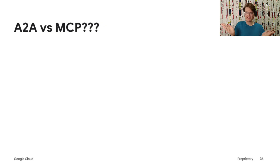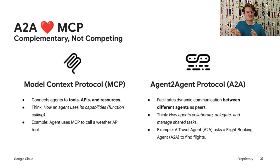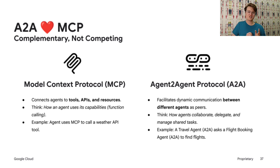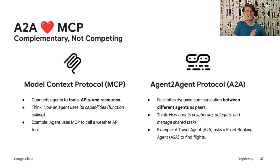Does A2A replace MCP, or are they just going to be competing forever? Absolutely not. A2A and MCP are complementary, not competing. MCP is all about how an agent connects to its tools, APIs, and resources — think of it as the standardized way an agent performs function calling, how it interacts with its own capabilities or external services it has direct access to. A2A, on the other hand, facilitates dynamic communication between different independent agents acting as peers — it's about how agents collaborate, delegate tasks, and manage shared workflows. So you'll often see both in a sophisticated agentic system: agents use A2A to coordinate with other agents and MCP to interact with their tools to get part of the job done.